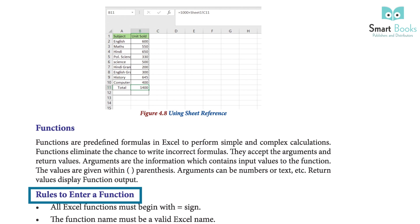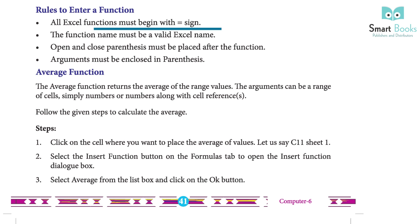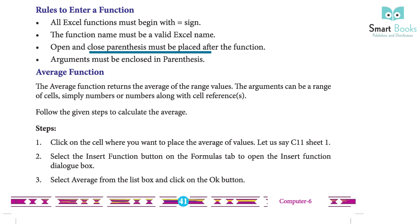Rules to enter a function: 1 — all Excel functions must begin with an equal sign. 2 — the function name must be a valid Excel name. 3 — open and close parentheses must be placed after the function name. 4 — arguments must be enclosed in parentheses.